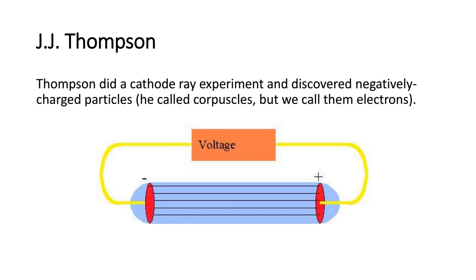Next in line was J.J. Thompson. Thompson did a cathode ray experiment and discovered negatively charged particles he called corpuscles, but today we call them electrons. And that's kind of a picture of his cathode ray experiment.